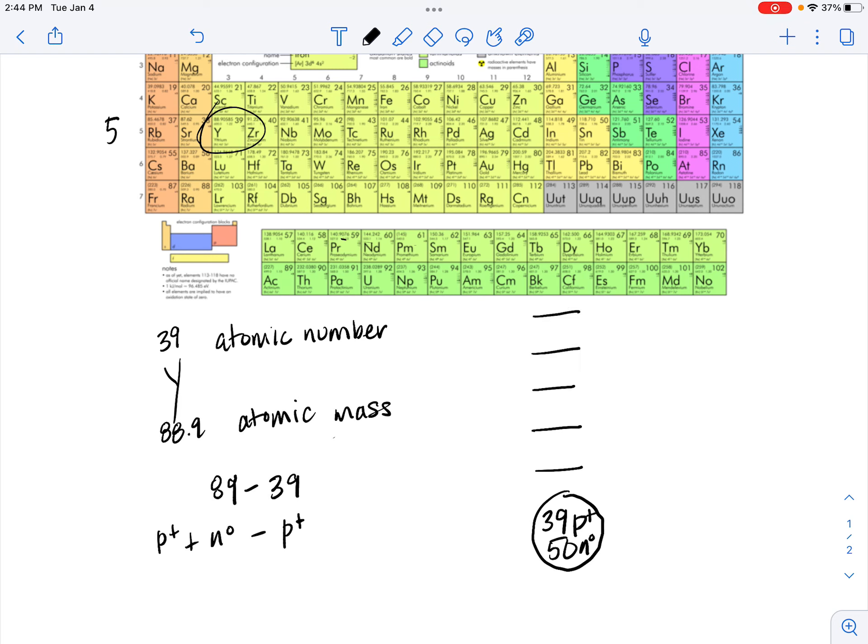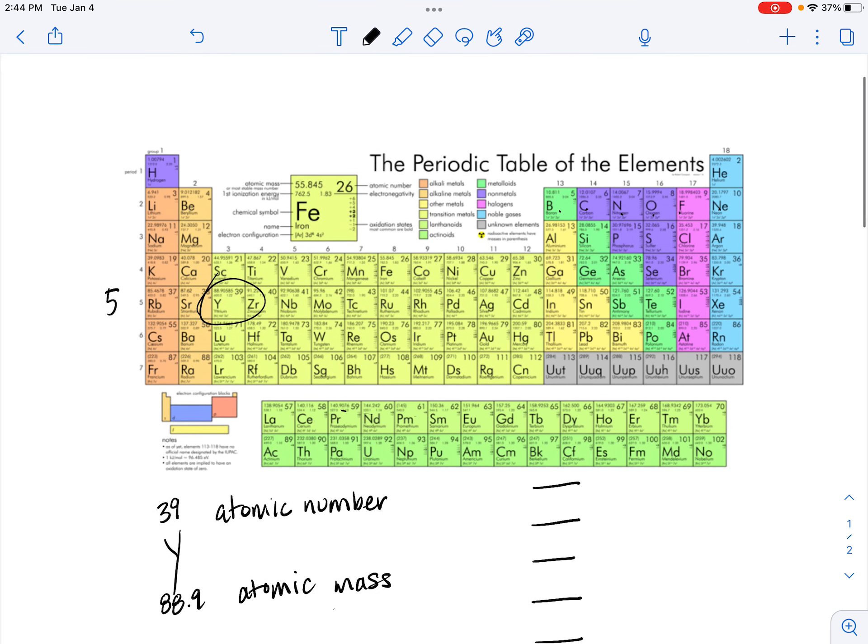So yttrium is in the fifth row of the periodic table, which tells us it has five energy levels where we can find electrons. Now how many electrons are in each energy level? Well, that can be determined based on electron configuration.